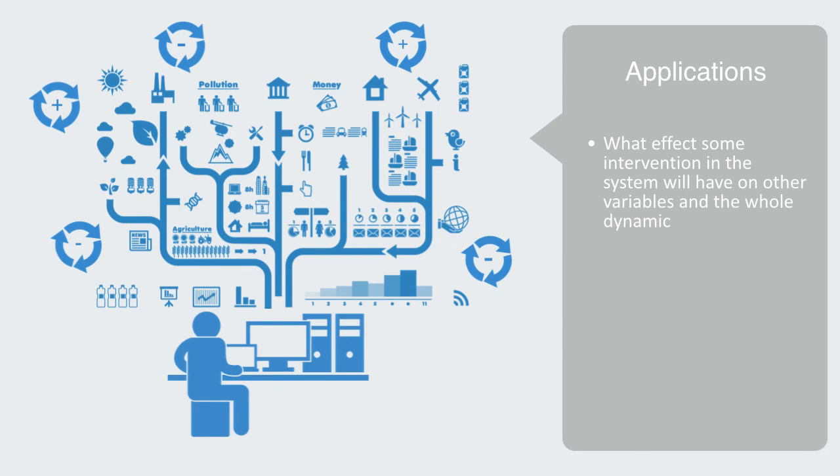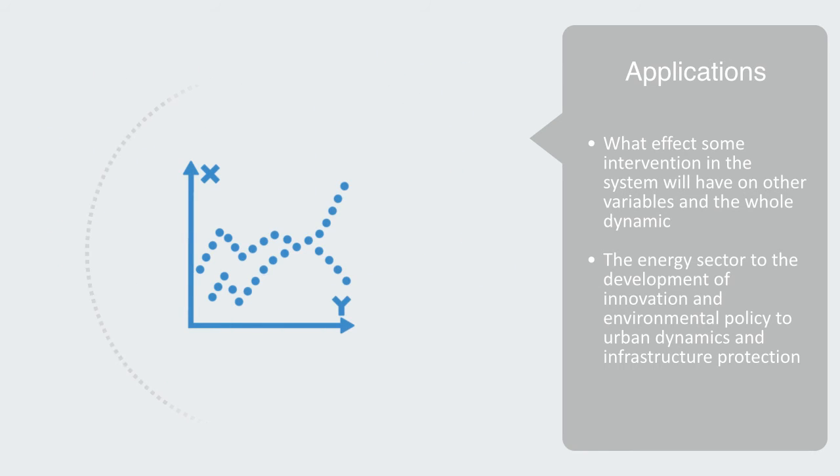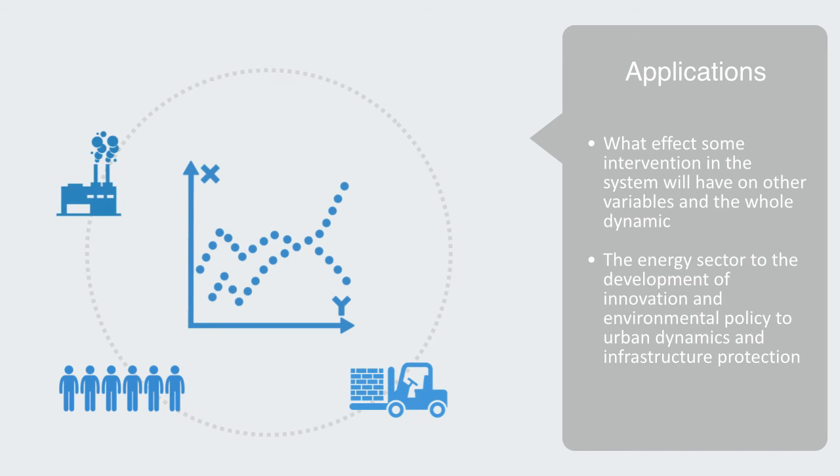They have been used for everything from modeling the workings of the energy sector, to the development of innovation and environmental policy making, to the modeling of urban dynamics and critical infrastructure protection. Systems dynamics was used as a modeling framework for the Limits to Growth publication, where researchers looked at how the variables of population, industrialization, pollution, food production, and resource depletion, interacted to create the long-term trajectory of the global economy and the possible limits to growth.